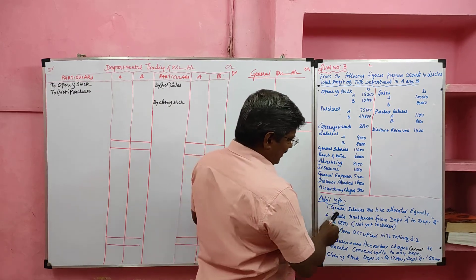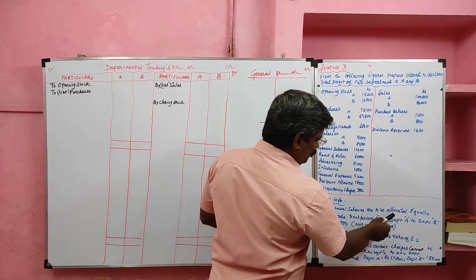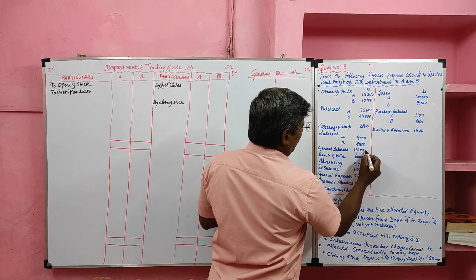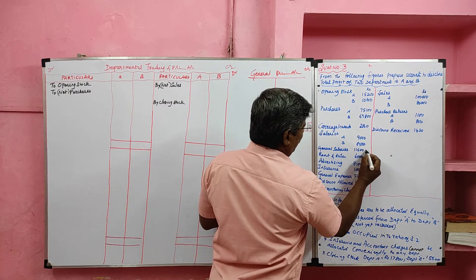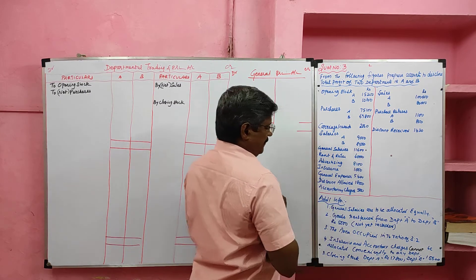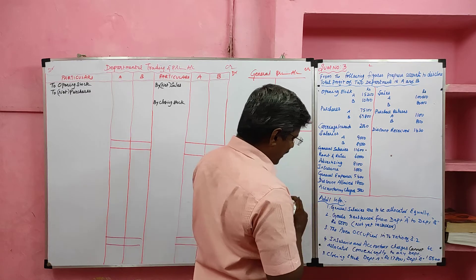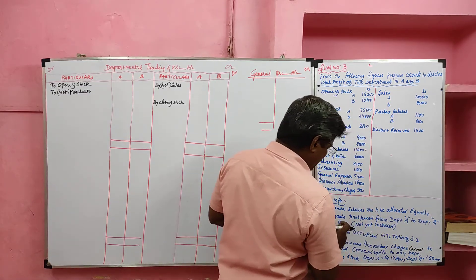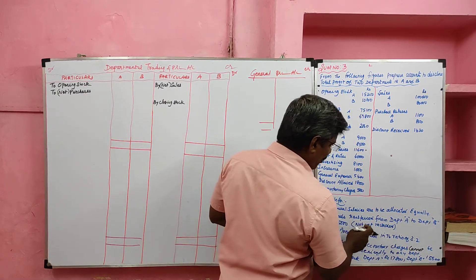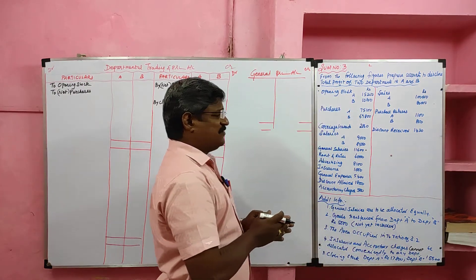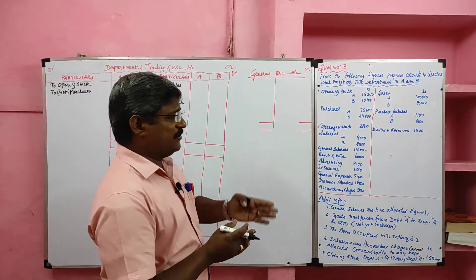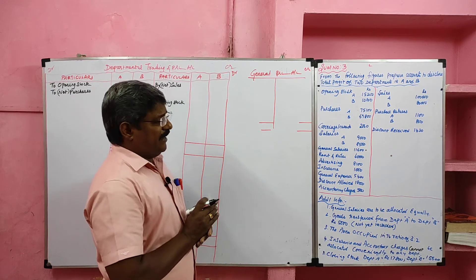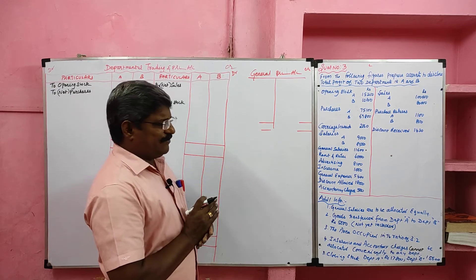Adjustment number one: general salaries are to be allocated equally. Then goods transferred from department A to department B, rupees 5,000, not yet recorded. Here, goods transferred from one department to another department — from department A to department B — is an interdepartmental transfer.